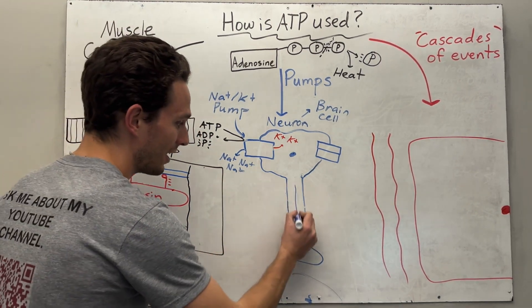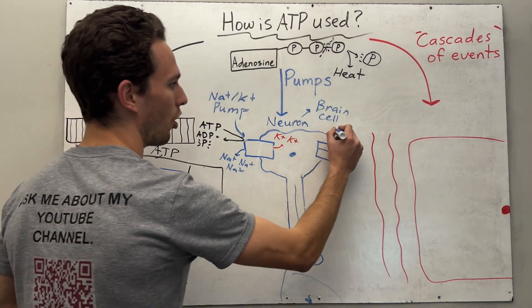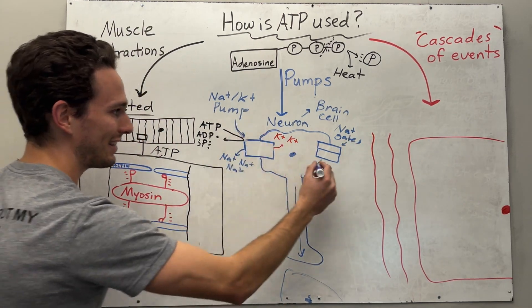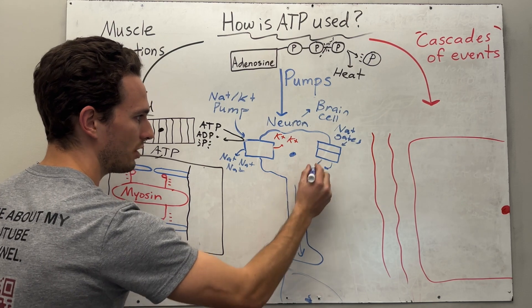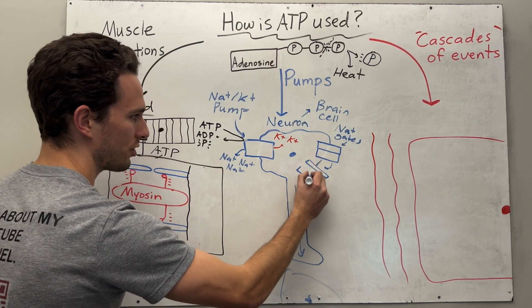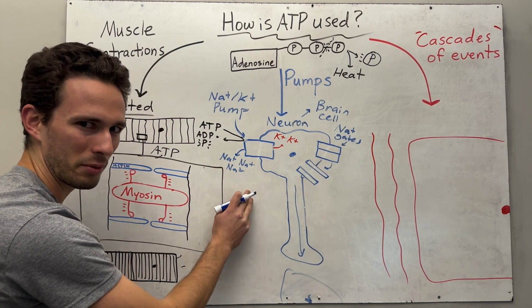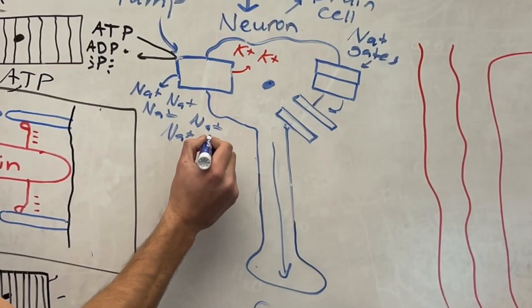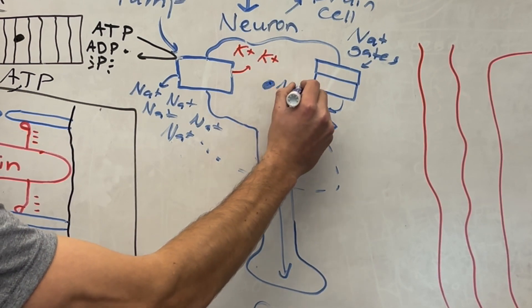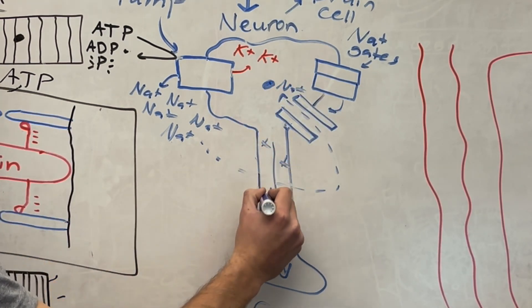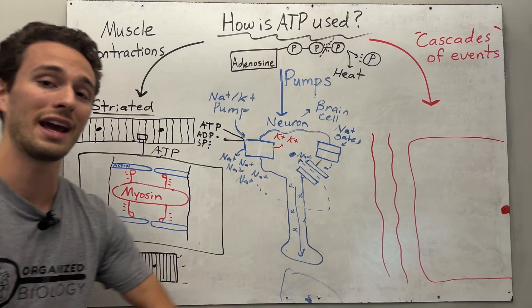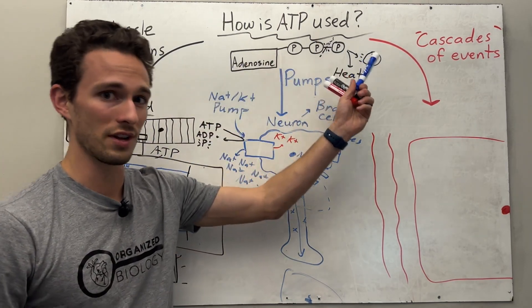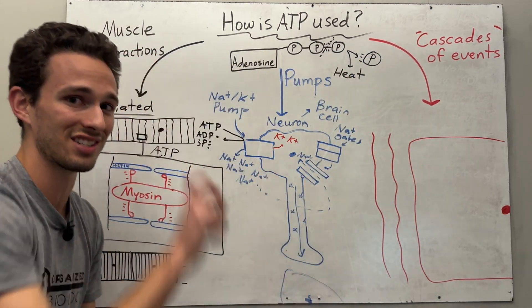When the neuron wants to actually send its signal, it opens what's called sodium gates — another protein the cell made. When the gate opens, if there's a lot of sodium outside, where does it want to go? Things flow from high concentration to low concentration. So sodium flows from outside into the cell, and by doing that, this cell gets super positively charged, sends the signal, and we have successfully sent the neuron chemical signal.